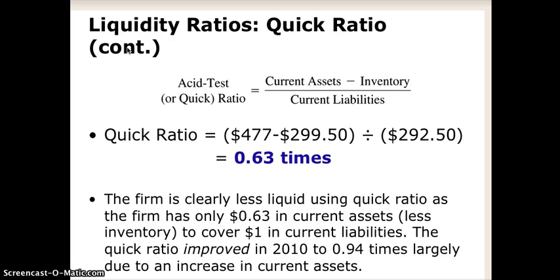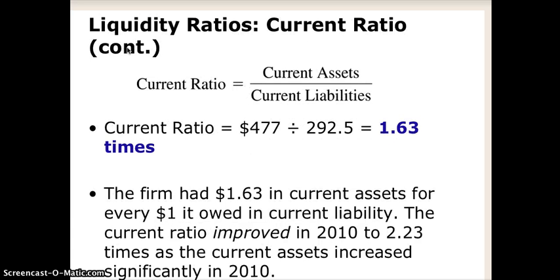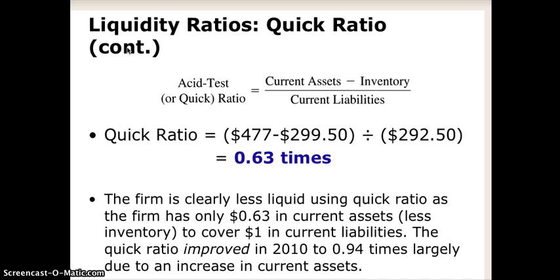In this example, the current ratio for this company was 1.63. But when you take out the inventory, the quick ratio is less than 1. That means their current assets are largely represented by inventory. It's not totally uncommon, but it's potentially a warning sign — if things got bad and they couldn't liquidate their inventory, how would they satisfy their current liabilities? Would they borrow as Walmart did, sell more stock, sell an asset, and so on?